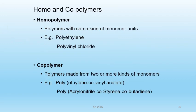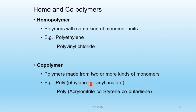Homopolymers are polymers made from the same kind of monomer units — for example, polyethylene (from ethylene only) and polyvinyl chloride (from vinyl chloride only). Copolymers are polymers made from two or more kinds of monomers — for example, polyethylene co-vinyl acetate, and polyacrylonitrile-co-styrene-co-butadiene.